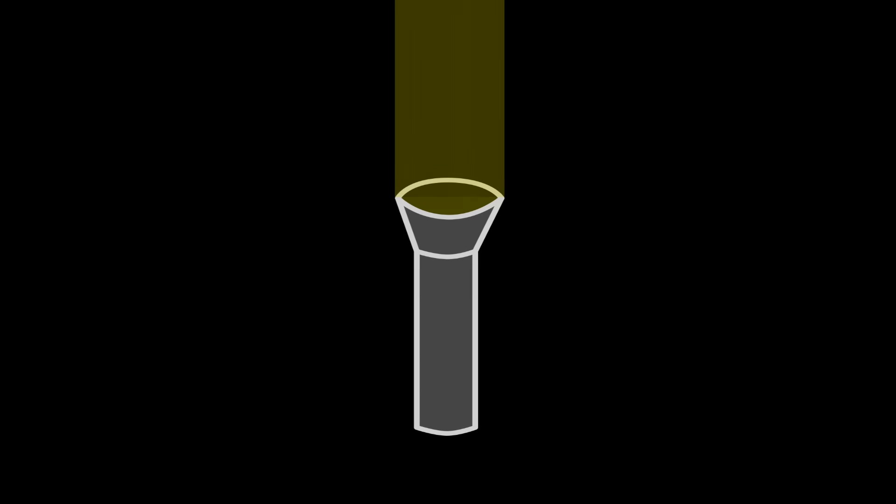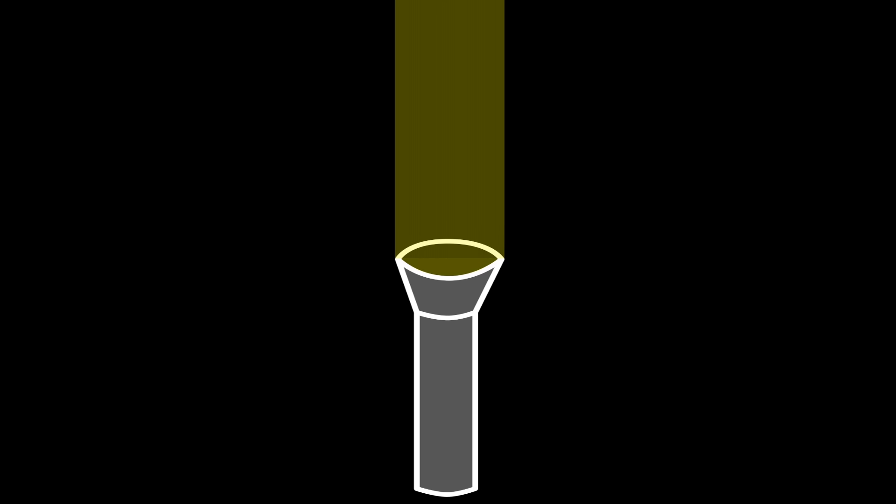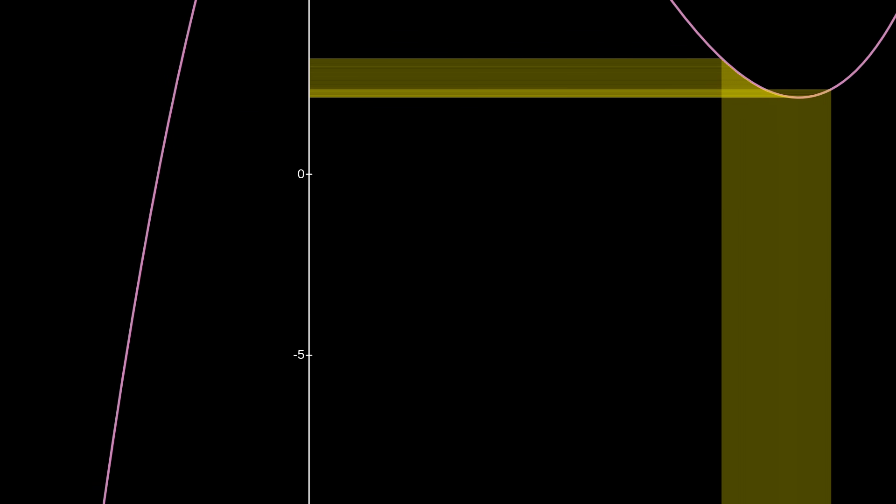So let's imagine that we have a flashlight that can cast a nice, crisp, rectangular beam. What happens if we point this at our graph, and let it reflect at a right angle to the y-axis?